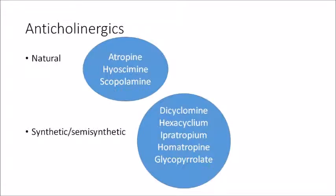Now, anticholinergic drugs. They can be natural, synthetic, or semisynthetic. Natural ones include atropine — the prototype of this group — and hyoscine or scopolamine. Synthetic or semisynthetic ones include dicyclomine, hexacyclium, ipratropium, homatropine, and glycopyrrolate.